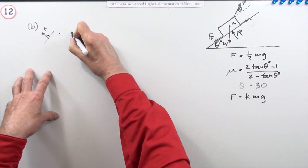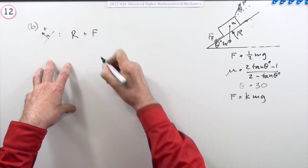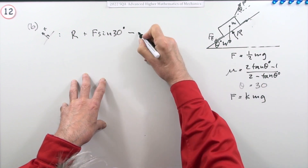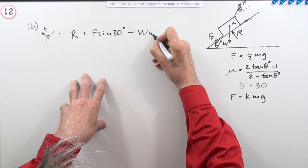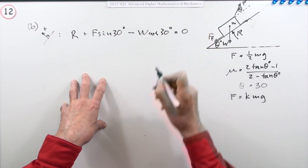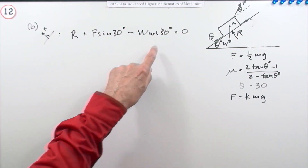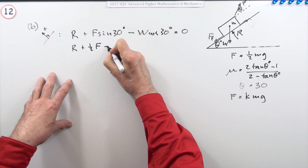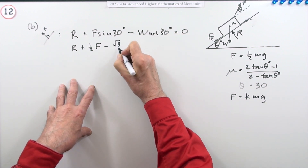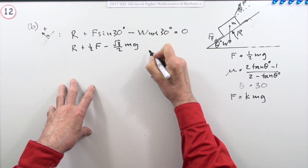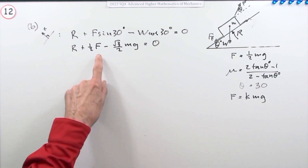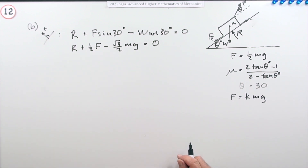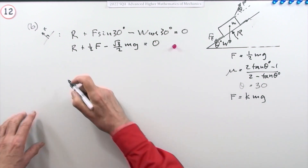Taking components perpendicular to the slope with θ = 30°: R + F sin30° − W cos30° = 0. Since sin30° = ½ and cos30° = √3/2, this becomes: R + ½F − (√3/2)mg = 0. I'll leave F as F rather than substituting kmg, since the answer will be expressed as F = [something] × mg. That's one equation and one mark.